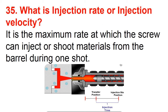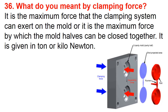Question number thirty-five: What is the injection rate or injection velocity? It is the maximum rate at which the screw can inject or shoot material from the barrel during one shot.